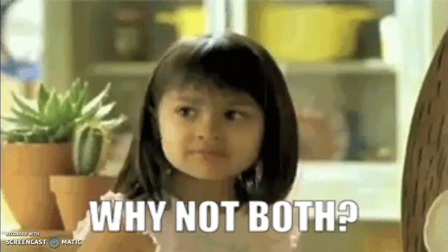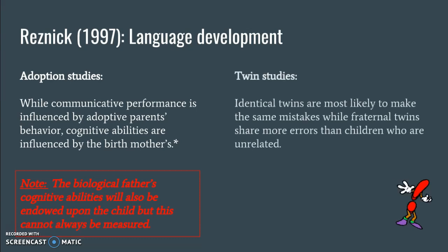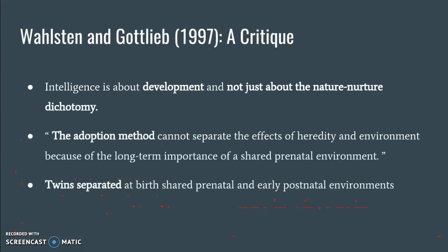But now a new question arises: why not both? Studies show that both nature and nurture influence intelligence. Resnick explored language development of various children; in his adoption studies, he notes that communicative performance is influenced by adoptive parents' behavior, whereas cognitive abilities are influenced by the birth mothers. As for Resnick's twin studies, he concluded that identical twins are most likely to make the same mistakes, such as pronunciation, while fraternal twins share more errors than unrelated children — though this could be due to children influencing each other in a shared environment. Stan and Gottlieb offer critique, stating that intelligence is about development and not just the nature-nurture dichotomy, and that adoption studies cannot separate the effects of heredity and environment because of the long-term importance of a shared prenatal environment — twins separated at birth shared both prenatal and early postnatal environments.